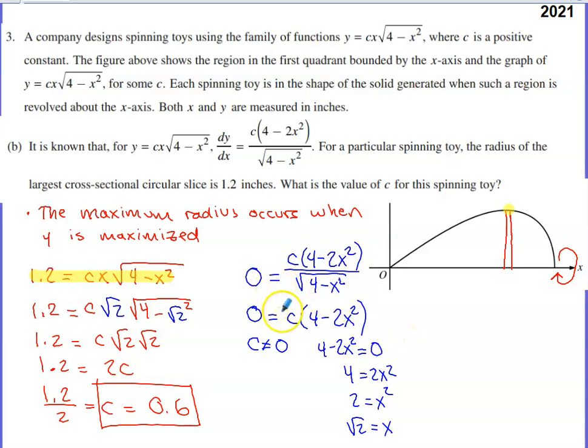The other thing that's going to have to be true at the maximum radius, at the maximum y value, is my derivative is going to have to either be zero or undefined. Now, we're going to have to make sure that it's zero. So I basically have the top of my derivative set equal to zero. Yes, this derivative is undefined at the x value of 2, but that is clearly not within the range of values that we should be considering here.